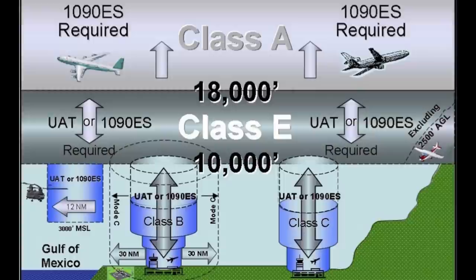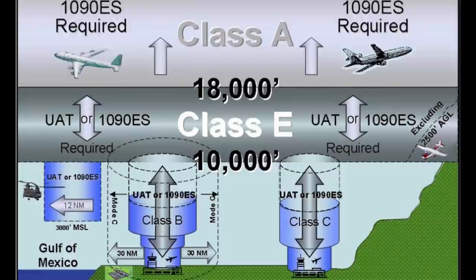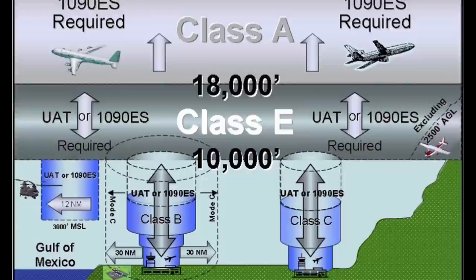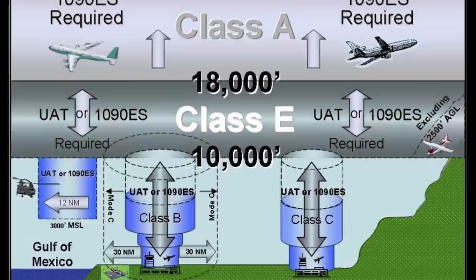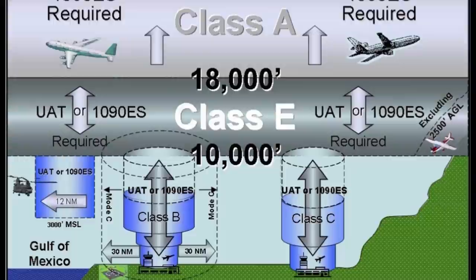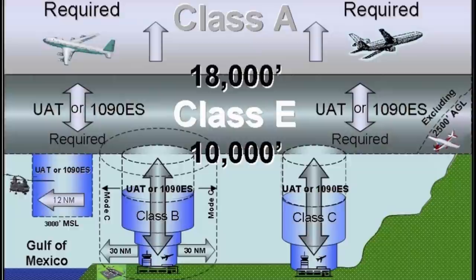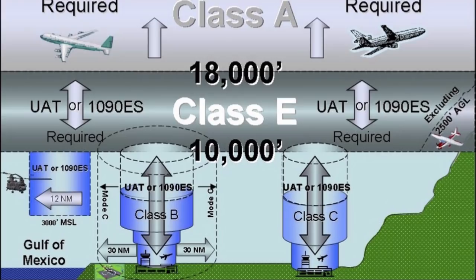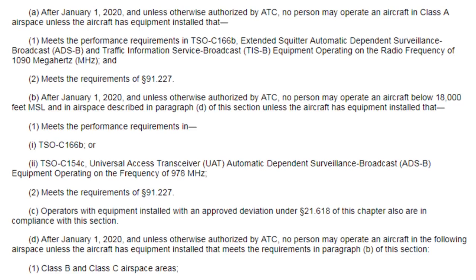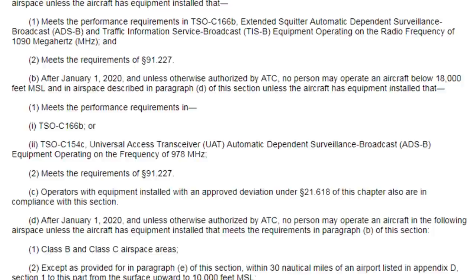ADS-B out will be required within and above Class Bravo and Charlie airspaces up to 10,000 feet, Alpha airspace, and any Class Echo airspace above 10,000 feet above mean sea level, except for that airspace which is below 2,500 feet above ground level. In addition, ADS-B out will be required in the airspace from US shores to 12 nautical miles offshore from 3,000 feet up to 10,000 feet above sea level. This is a brief generalization — Part 91.225 can be found on the FAA's website, and a link will be in the description.